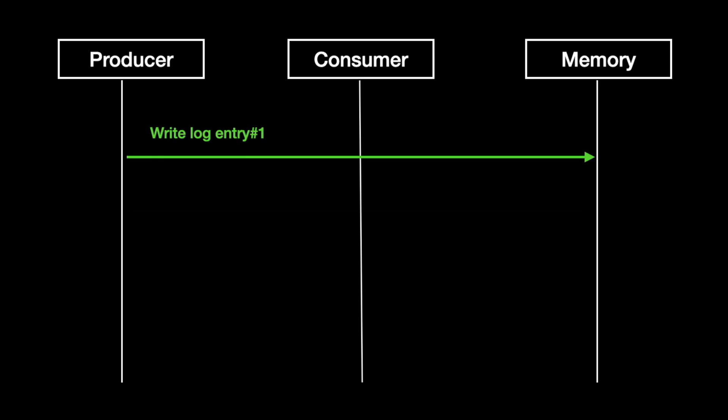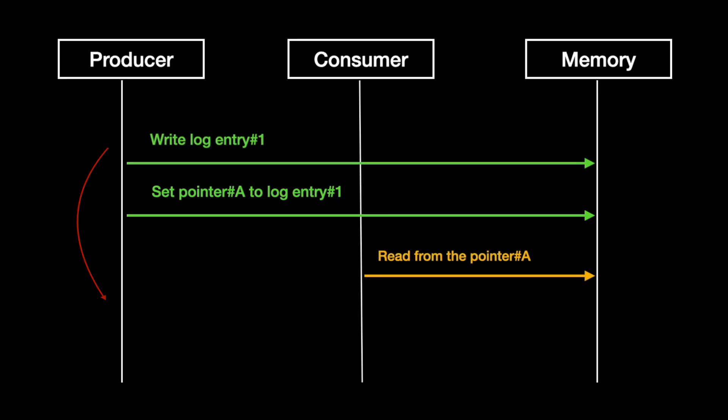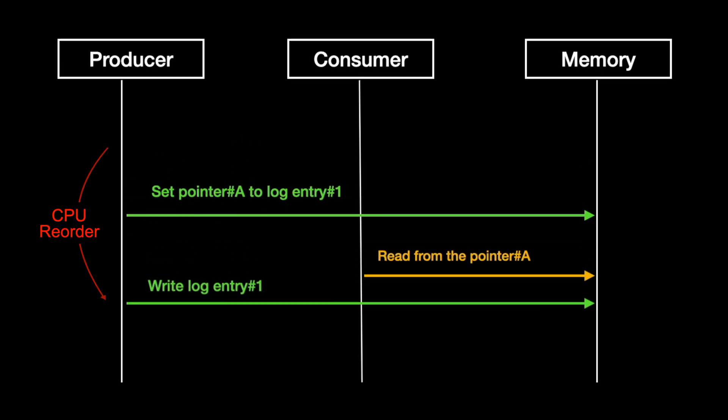The cause? A missing memory fence. The producer thread was writing into the log, then setting a pointer to that log in a shared queue. But without a memory barrier, the CPU sometimes reordered the writes to the pointer before the data was actually committed.